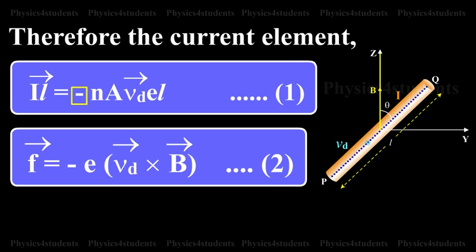Since the electrons move under the influence of the magnetic field, the magnetic Lorentz force on a moving electron is f = -e(v_d × B). This is equation 2. The negative sign indicates that the charge of the electron is negative.